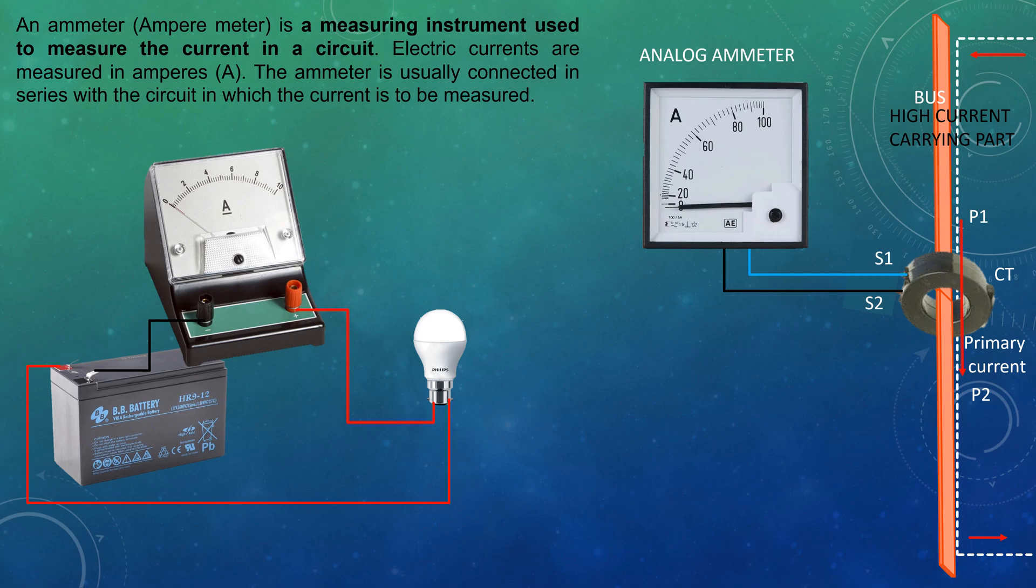The bus acts as primary of the CT. S1 and S2, the secondary terminals of the CT, are connected with an ammeter of suitable range and ratings.